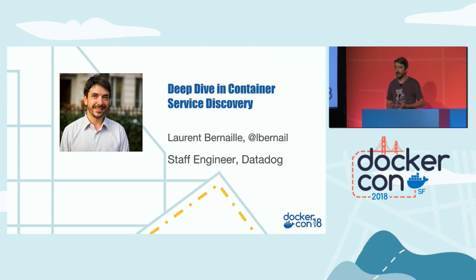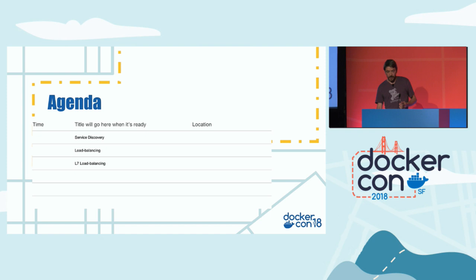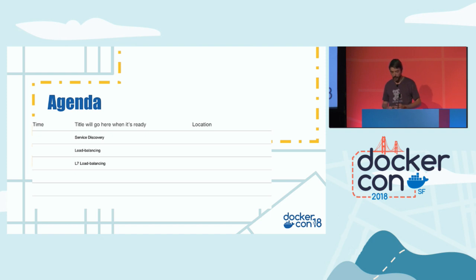We worked on two main topics. The first one is CNI — how to do pod-to-pod communication and optimize for it — and also load balancing, which is the topic I'm going to focus on today. We're going to talk about service discovery, then load balancing, where I'll focus on IP tables and then IPVS, and finally we'll see all the alternative solutions.